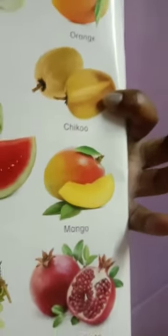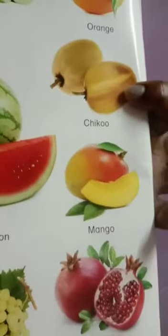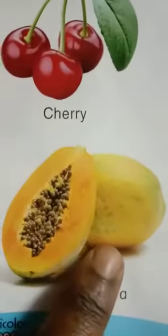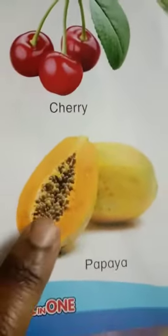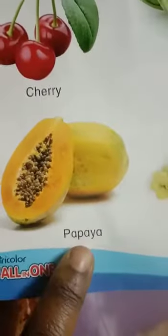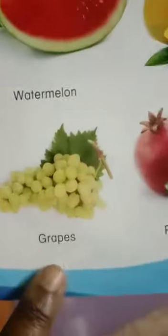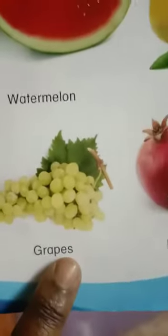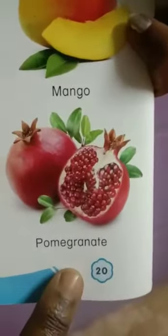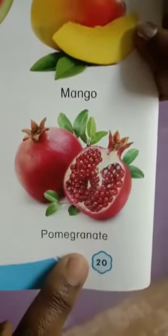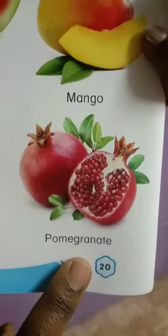Mango is a king of fruit. This is papaya. It has many small seeds inside. This is grapes. It is green color. This is pomegranate. It is red in color.